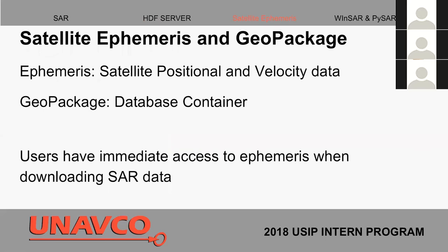Next, I tested serving up satellite ephemeris using GeoPackage. Satellite ephemeris is the positional XYZ and velocity information of a given satellite at any given time. So if you want to know where a satellite is at a given time, you use satellite ephemeris to calculate that. That's very important for SAR data — when you're processing all this information required from satellites, you need to know where the satellite was when it made that acquisition.